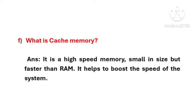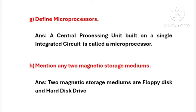A microprocessor is a Central Processing Unit (CPU) built on a single Integrated Circuit (IC). Two magnetic storage mediums are the floppy disk and the hard disk drive.